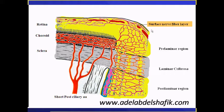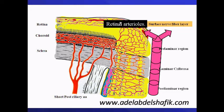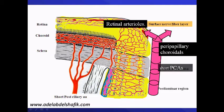First we need to discuss the blood supply of the optic nerve head. The optic nerve has a pre-laminar area, laminar area, and post-laminar area, and very superficially we have the superficial nerve fiber layer. The central retinal artery supplies the superficial nerve fiber layers, while the choroidal circulation will supply the pre-laminar, the laminar.